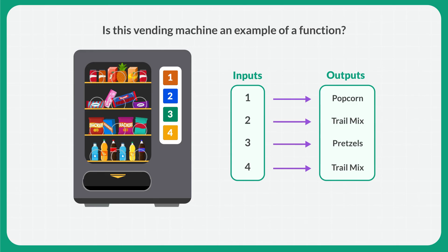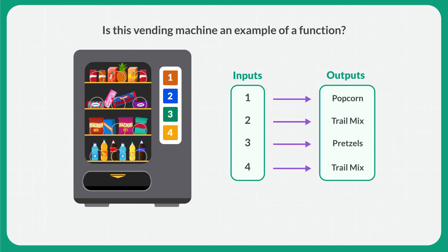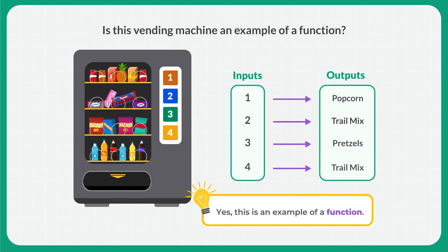Use what you've learned to determine: is this vending machine an example of a function? Input 2 and 4 both produce bags of trail mix. But button 2 only has an output of trail mix, and button 4 only has an output of trail mix. Since each input gives exactly one output, or one type of item, this vending machine is a function.